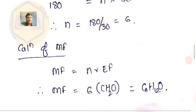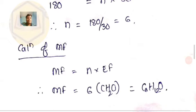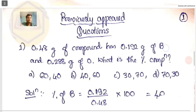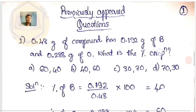Let's consider some questions from previous exams related to empirical formula and molecular formula. First question: 0.48 grams of a compound contains 0.192 grams of boron (B) and 0.288 grams of oxygen. What is the percentage composition? You can try to predict without detailed calculation, but be careful with rough approximations — they can sometimes mislead you.